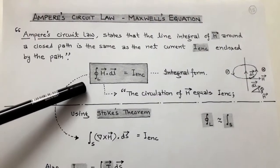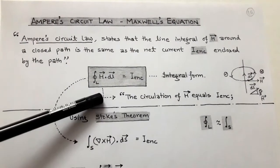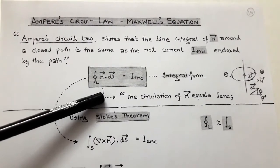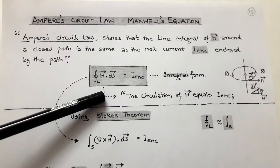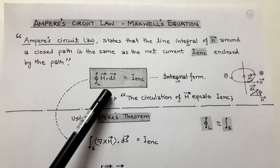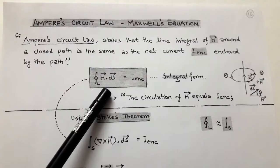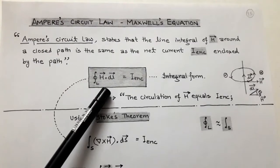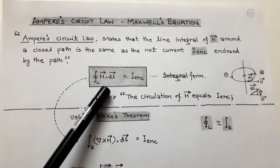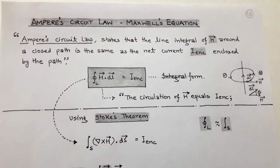The circulation of H vector is determined by the closed line integration of H dot dL. That circulation of H vector is equal to the current enclosed.